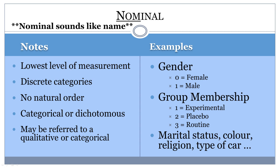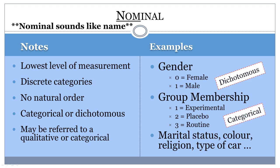Nominal data may be considered dichotomous or categorical. Dichotomous data falls into one of two categories, like male and female, or yes and no. Categorical data have more than two possible values, such as marital status or group membership.